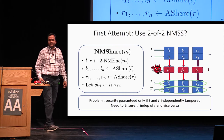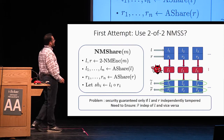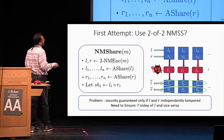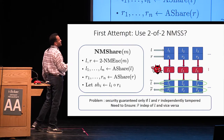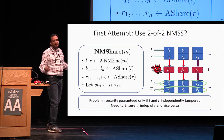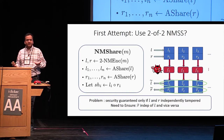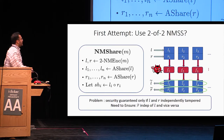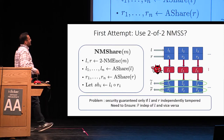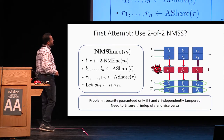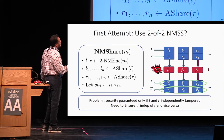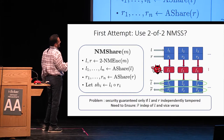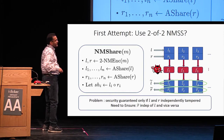Here, shares of L and shares of R are stored together and can be jointly tampered. It is not clear how to argue they are independently tampered. We really need to ensure that R-tilde is independent of L — depends only on R — and vice versa, L-tilde must only depend on L and not on R.